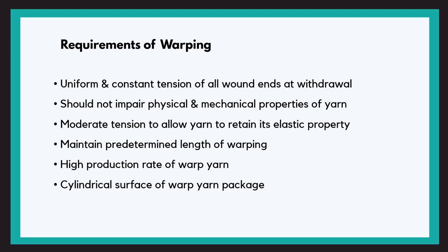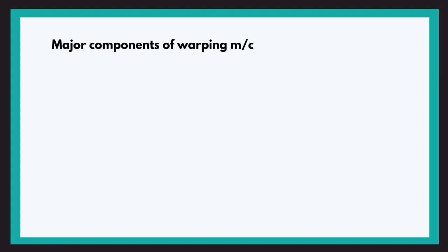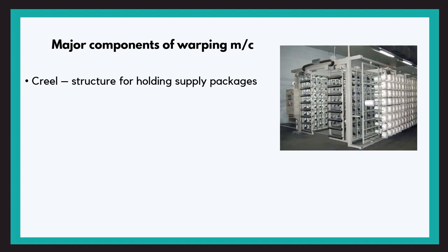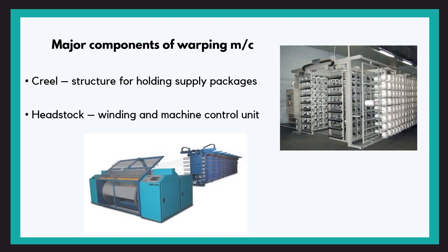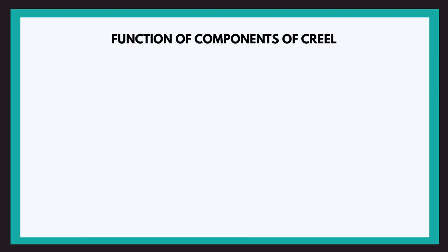Now let us have a look at the major components of the warping machine. The warping machine can be divided into two parts: the creel and the headstock. The creel is a structure for holding the supply packages, and it has a tensioner and the yarn clearer. The headstock has the winding and machine control unit; it rotates and winds the warp sheet onto the package.